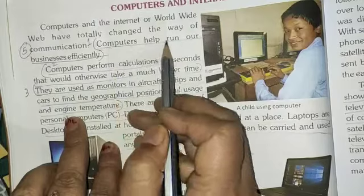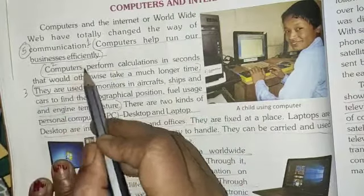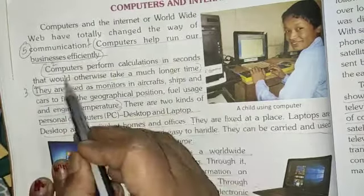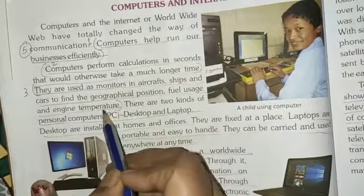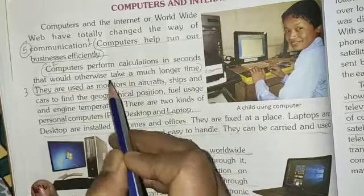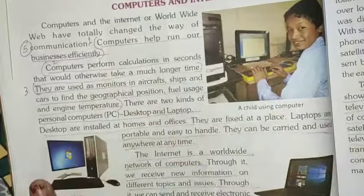Here point-wise you have to write. First point, computers help run our business efficiently. Number 2, computers perform calculations in seconds, up to here. Number 3, they are used as monitors, to here. Up 3 points here you have to write in this question.